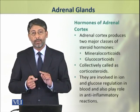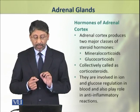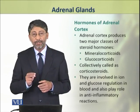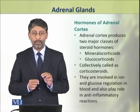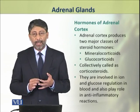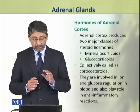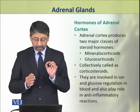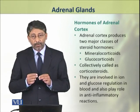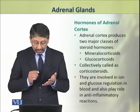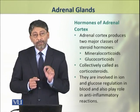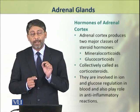Now we shall discuss the hormones of the adrenal cortex. The adrenal cortex produces two major classes of steroid hormones: glucocorticoids and mineralocorticoids. Collectively, these two classes are called corticosteroids. These corticosteroids are involved in ion and glucose regulation in the blood, and they are also involved in anti-inflammatory reactions.